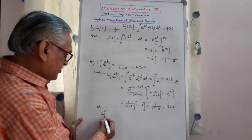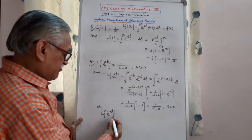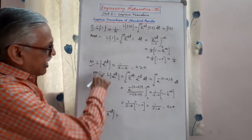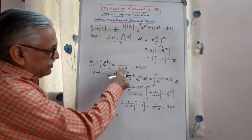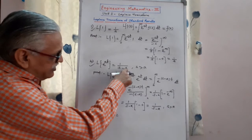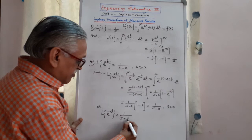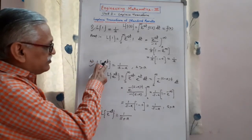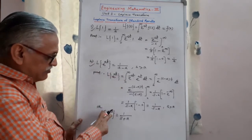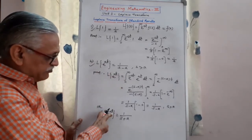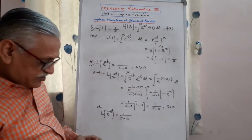We also have the result: Laplace of e^(−at) equals 1/(s + a). We obtain this by replacing a with −a in the previous result. So when the exponent is +at we get 1/(s − a) in the denominator, and when it is −at we get 1/(s + a).